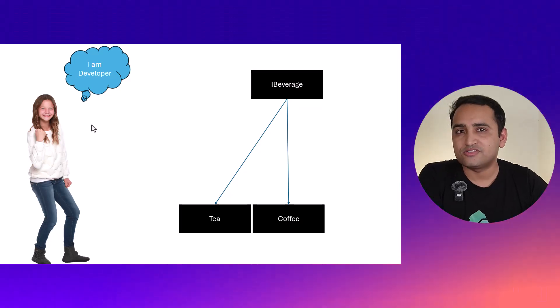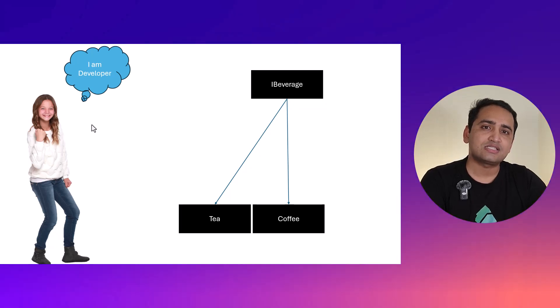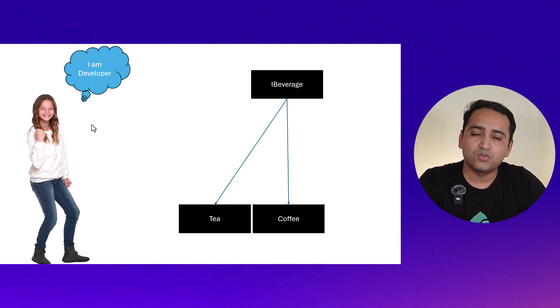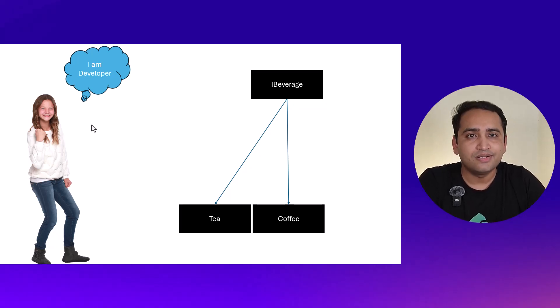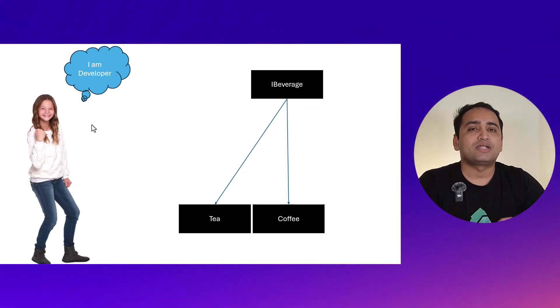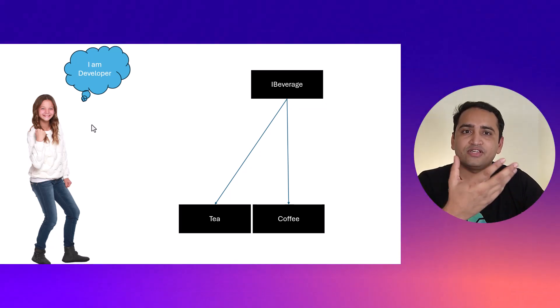As per this example, let's say I want to start a cafe and that cafe will sell only beverages. As of now we have only two beverages — first is tea and second is coffee. If you are having this very basic scenario, let's understand how we can implement this in our application. I can create one interface IBeverage and two concrete implementation classes: Tea and Coffee.